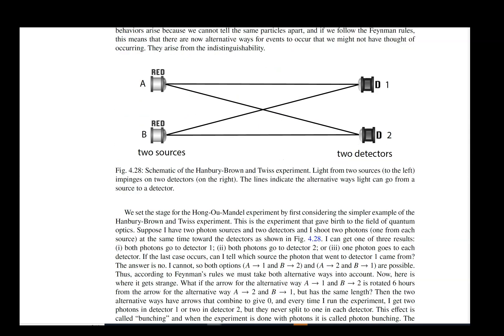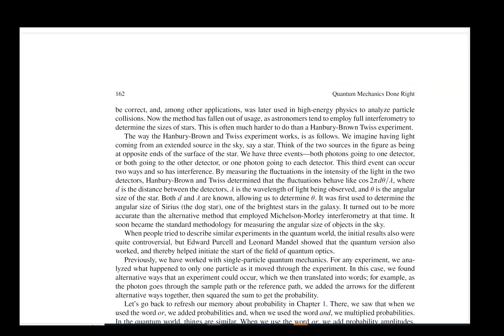We talk about the Hong-Ou-Mandel experiment and photon bunching. This is also a really cool experiment. It started off with something called the Hanbury Brown and Twiss experiment that allowed astronomers to measure the angular size of stars by looking at the same star with two different telescopes and correlating the brightness and the darkness and the fluctuations of the light between the two telescopes.